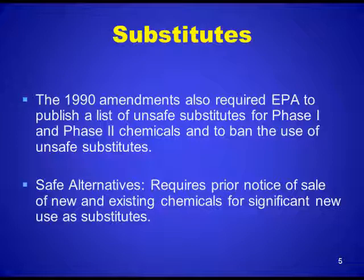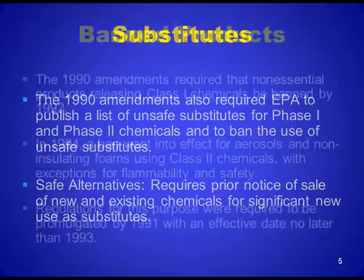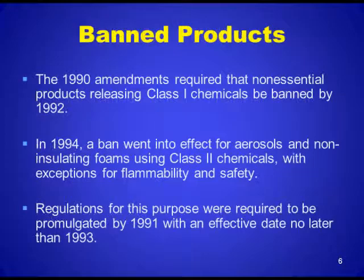Safe alternatives require prior notice of sale of new and existing chemicals for significant new use of substitutes. Regarding banned products, the 1990 Amendments required that all non-essential products releasing Class I chemicals be banned by 1992. In 1994, a ban went into effect for aerosols and non-insulating foams using Class II chemicals, with exceptions for flammability and safety. Regulations for this purpose were required to be promulgated by 1991 with an effective date no later than 1993.